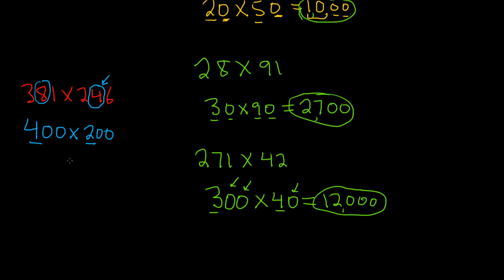Then you just multiply the 4 and the 2. So you get 8. And then you just count the zeros. 1, 2, 3, 4.